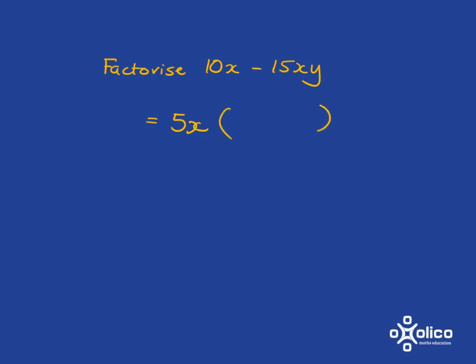So x will be another part of what you take out. What's left in the brackets? Well, 5x times this must give you 10x, so this must be 2, and here 5x multiplied by this must give you minus 15xy, so obviously what is here has to be minus 3y.